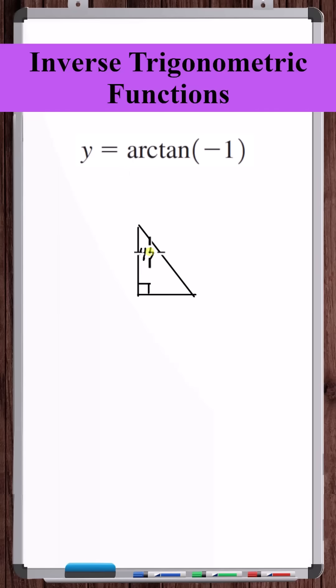Now, if we draw the 45-45-90 triangle, we see that the tangent of 45 degrees is 1, opposite over adjacent. But now this value is negative 1.